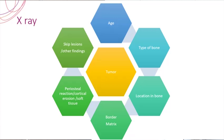Then we talk about the soft tissue extension of the tumor, or there can also be extension into the bone — for example, a cortical erosion. Then try to talk about whether there is any pathological fracture or other complications seen in the X-ray. And if possible, comment about a skip lesion. This is the order by which you should be presenting.